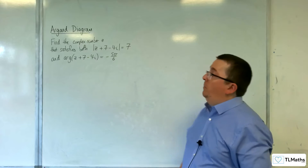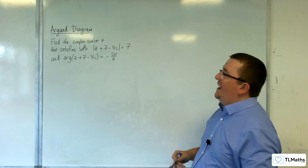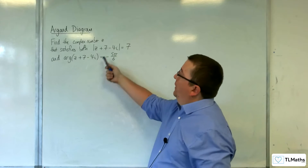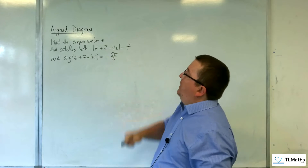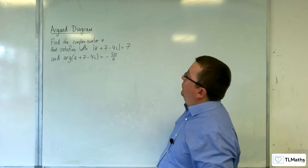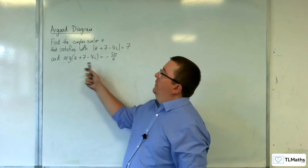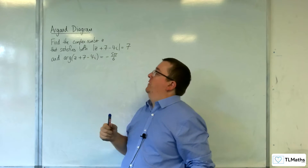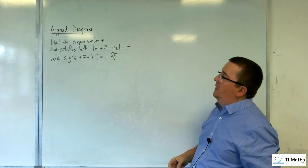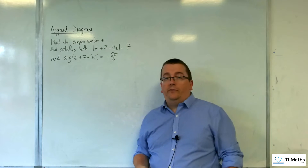In this video we're going to look at the problem where we need to find the complex number z that satisfies both the modulus of z plus 7 take away 4i is equal to 7, and the argument of z plus 7 take away 4i is equal to minus 5π over 6.